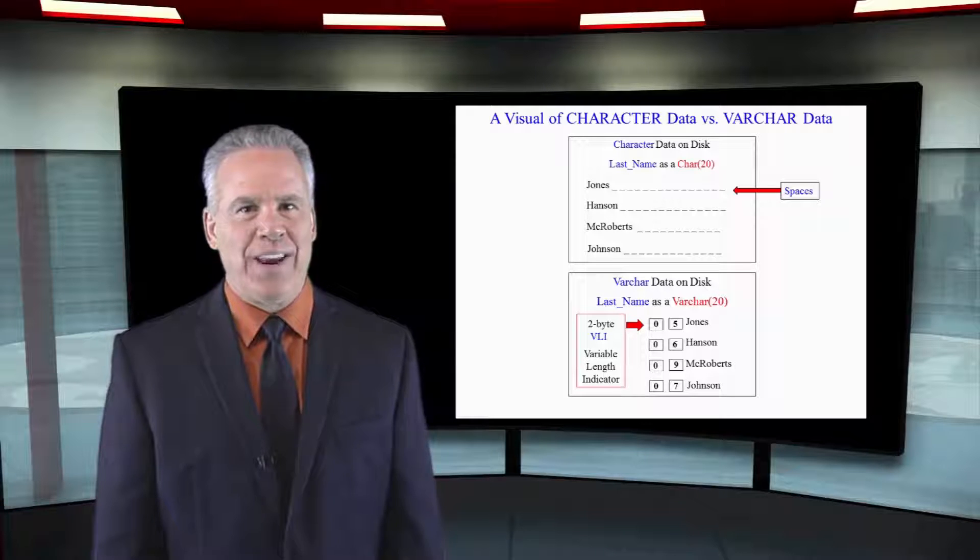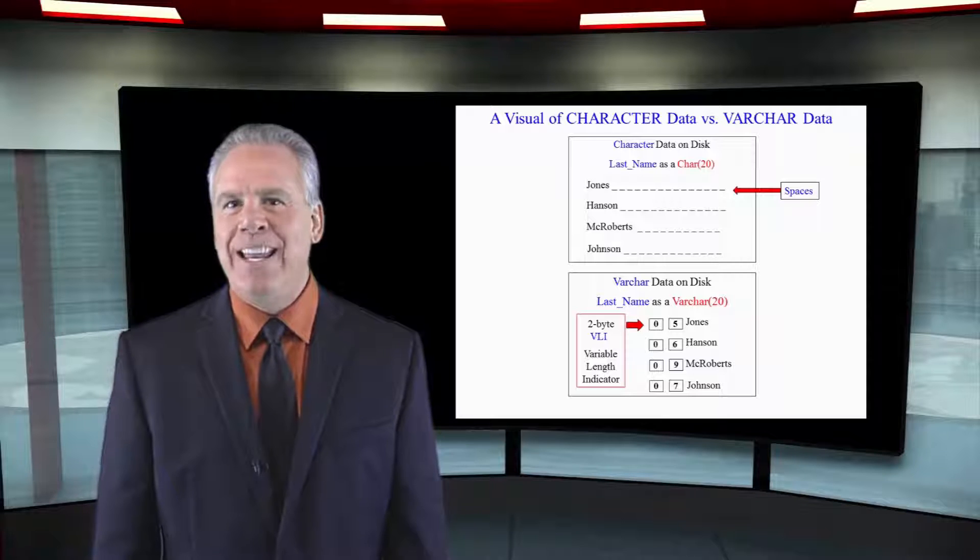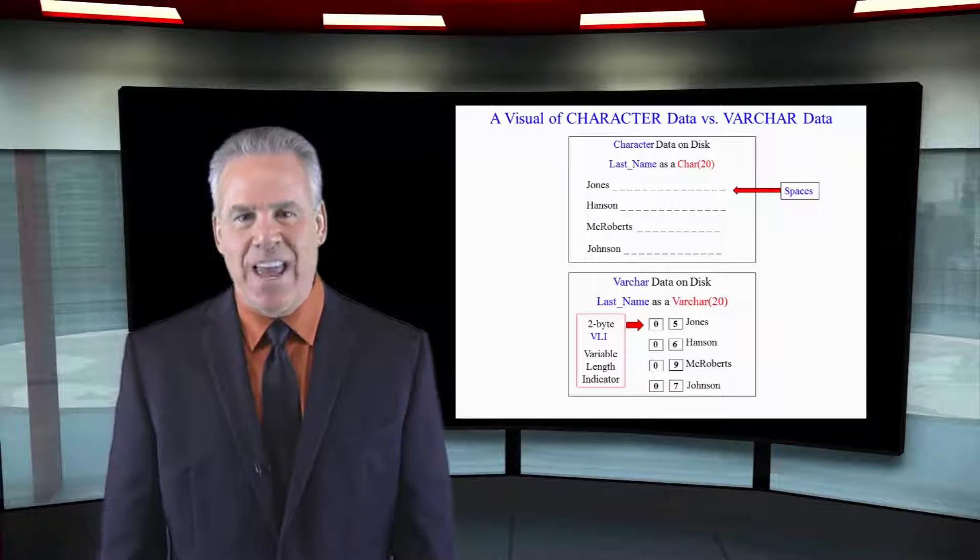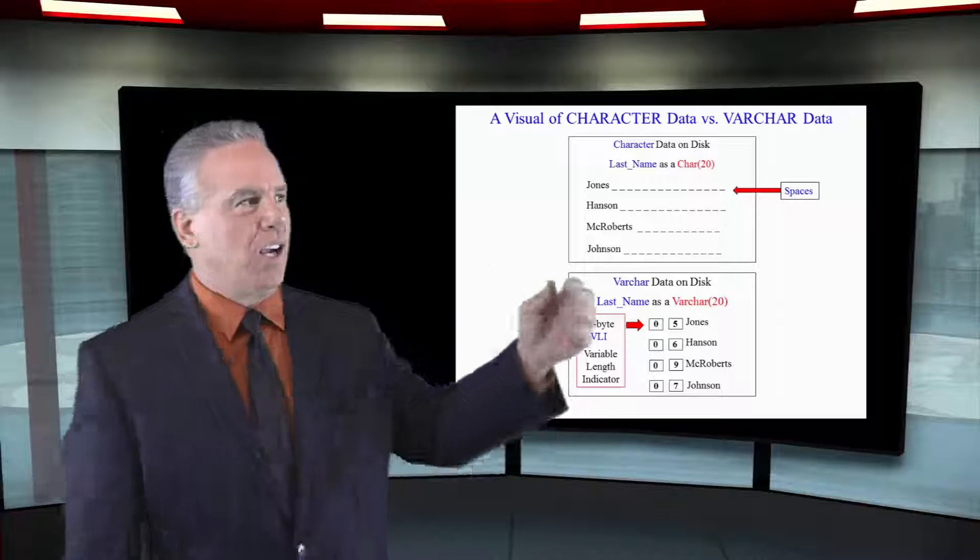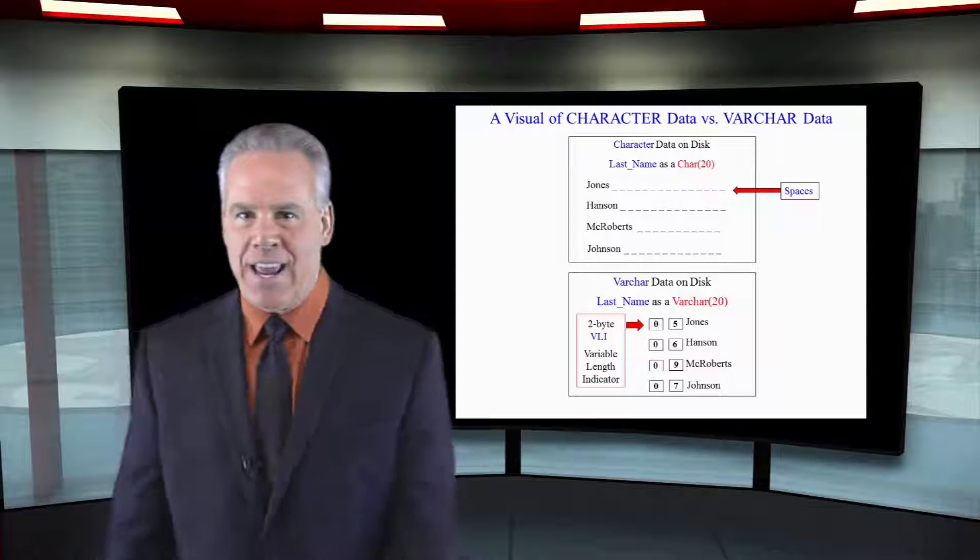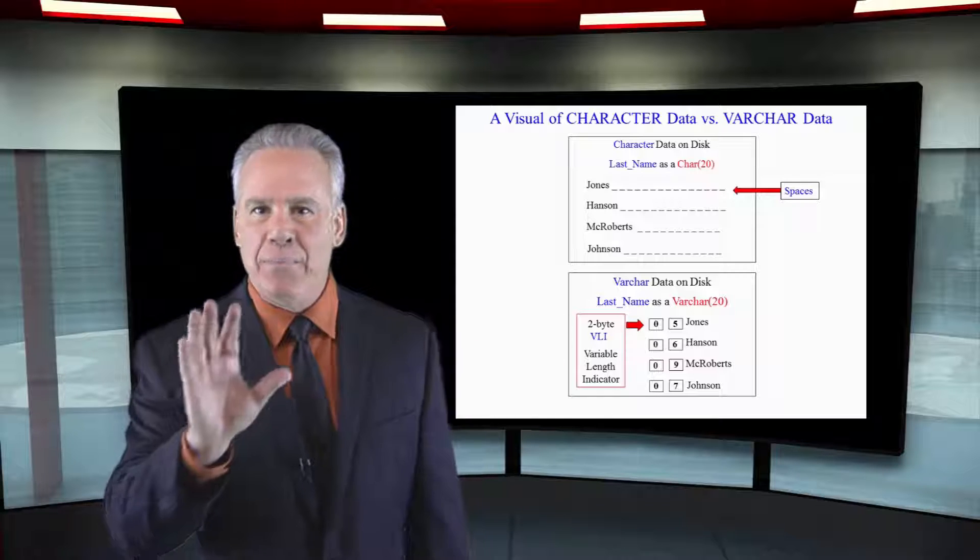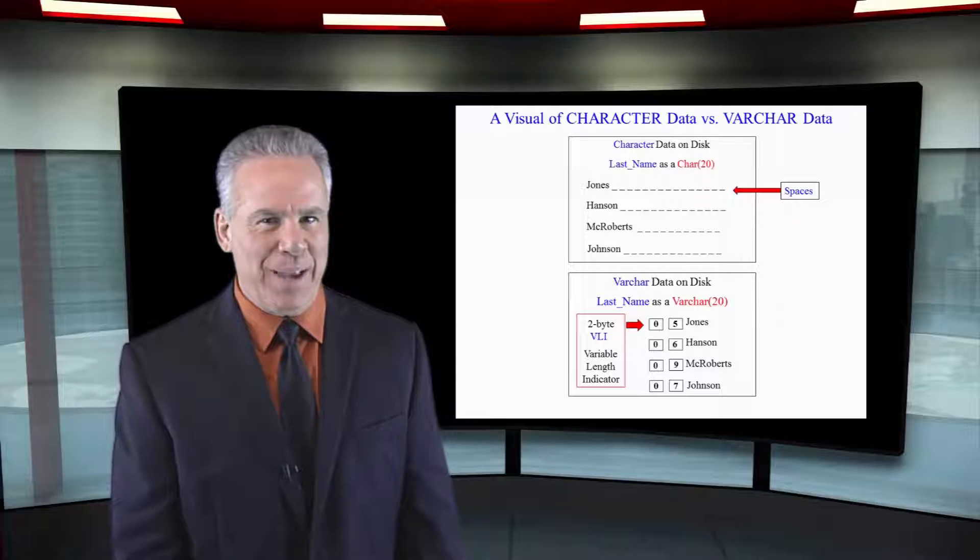We're going to take a visual of character data versus VARCHAR data and how it's laid out on the disk. As you can see here, I've got a CHAR(20) which is the data type for last name. So Jones is J-O-N-E-S, five characters, and padded with 15 spaces at the end.